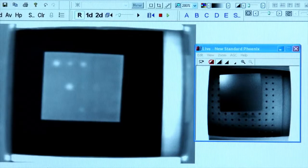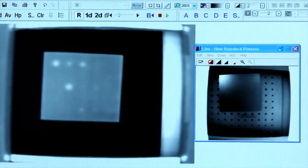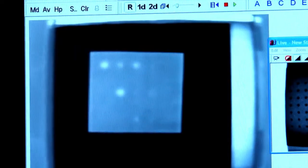With flash thermography, you use a flash of photographic lights onto the part, and then you take a video using an infrared camera.